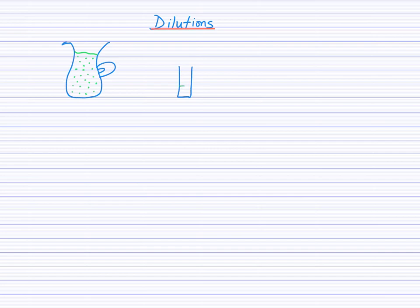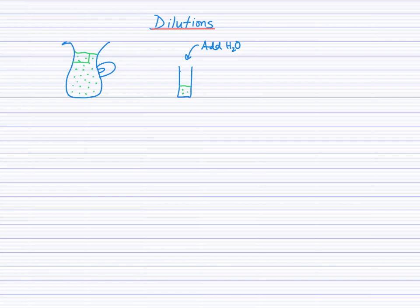You pour a small volume of that solution into your glass and then you add water. So the portion that fits there was like this section, which had about three dots of solute in it. Then you add water and fill the glass up. As you stir or pour it together, you find that in the full volume, those three dots of solute are spread out amongst the entire volume.